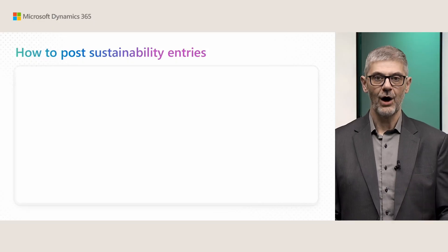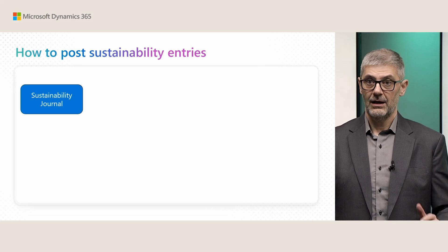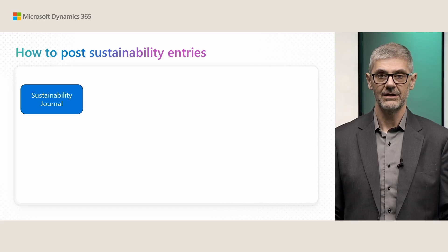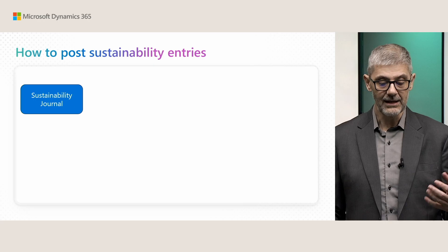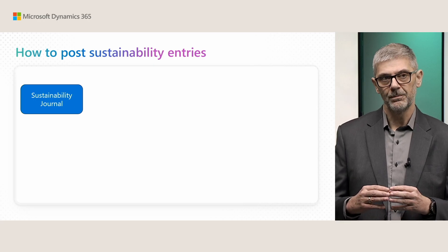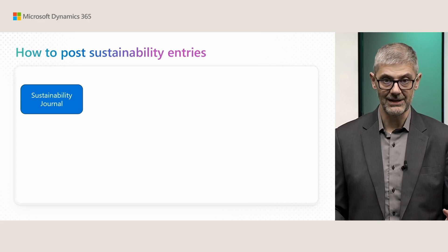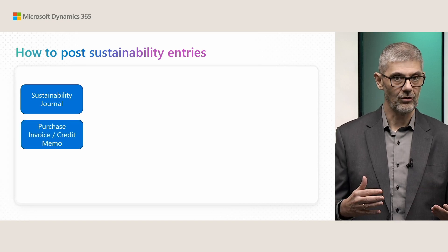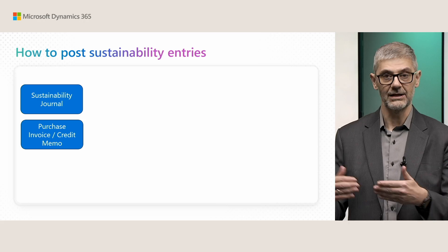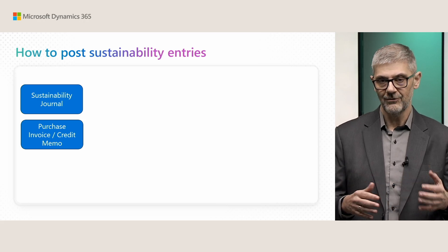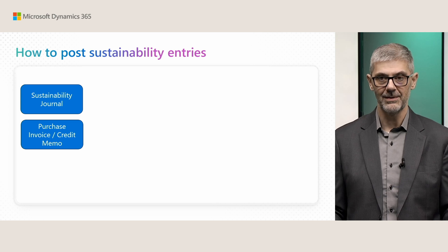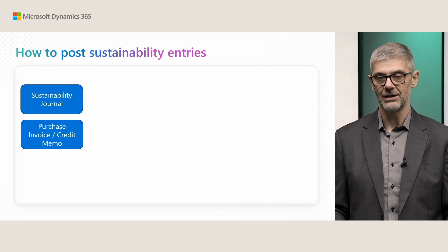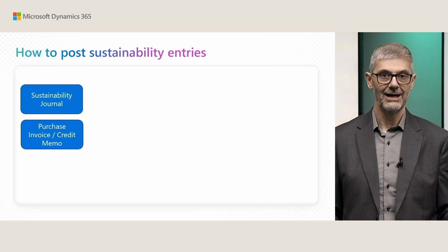Let's remind you how we started. Sustainability functionality is only two waves old — this is the third wave. In the first wave we enabled posting sustainability entries only through the sustainability journal. Then based on your feedback, you asked to enable purchase documents, so we enabled purchase invoices, purchase orders, and credit memos in the previous wave, so you could add sustainability information directly in your purchase documents.